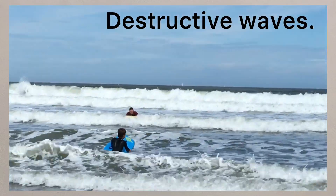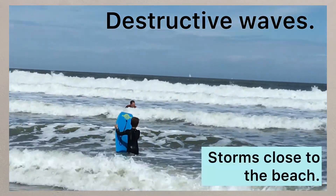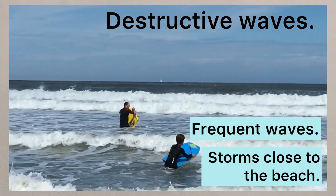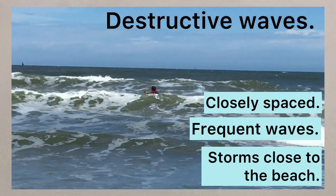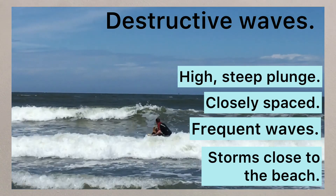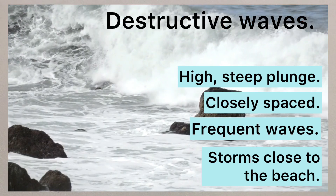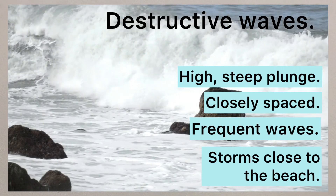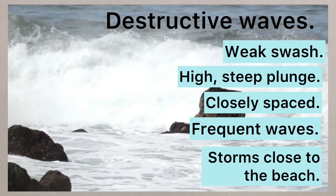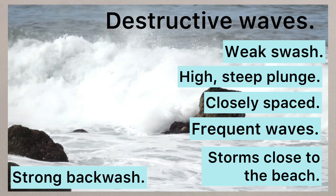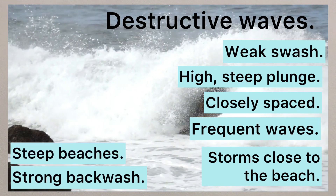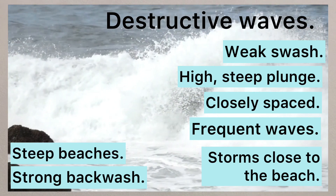Destructive waves, on the other hand, are formed when storms are closer to the coast. These are frequent and closely spaced waves that are high and steeply plunging as they reach the beach. Due to their steep plunge, they don't produce a great deal of forward energy in the swash, but they have a powerful backwash that will drag material back towards the sea, creating steeper beaches.